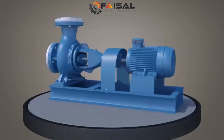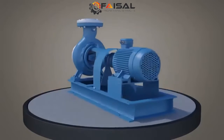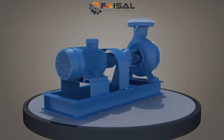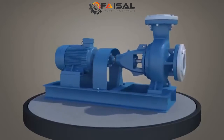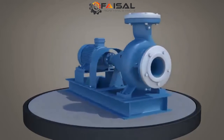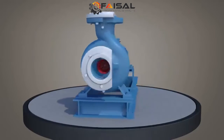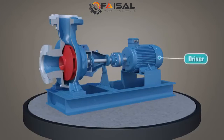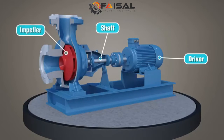A centrifugal pump converts power into pressure rise to transport liquids from one location to another via piping. A centrifugal pump consists of four main components: the driver, the shaft, the impeller, and the casing.